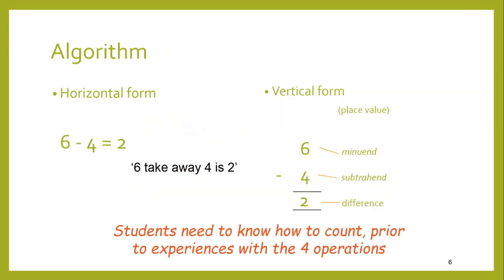The algorithm can be written in a horizontal format or a vertical format. We usually encourage the vertical format because it's useful with place value — having the units under the units, the tens under the tens, the hundreds under the hundreds certainly makes life a lot easier. Six minus four can be read as 'six take away four equals two.' The number that we are subtracting is officially called the subtrahend — the four in this case is the subtrahend, the six is the minuend, and of course the two is the difference.